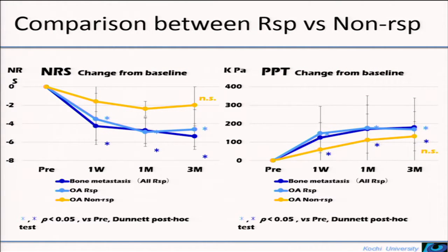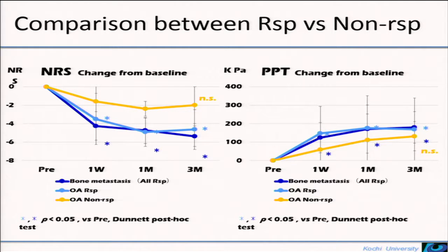The slide shows the comparison between responders and non-responders. NRS of responders significantly decreased and PPT significantly increased. It was suggested that for the evaluation of local pain, PPT is useful for quantitative evaluation and assessment of treatment effect after MRgFUS.